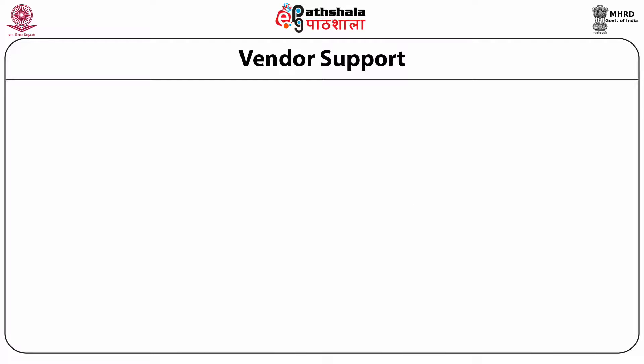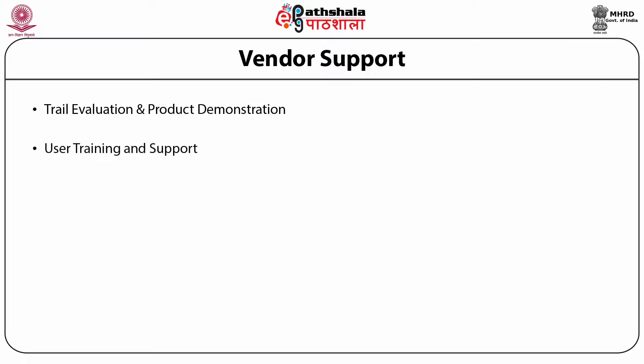Vendor support: the vendor should have prior experience with academic institutions to provide electronic resources. The reputation of the vendor, technical and user support are also to be considered. It is useful to determine the range of vendor support services available including trial evaluation and product demonstration. The vendor should provide resources on a trial basis for a certain period and also provide demonstrations. User training and support: the vendor should provide training to users with proper documentation and support ongoing training for the access period. Technical support: the vendor should have the capability to provide resolution to technical issues; support should be timely, professional and effective.